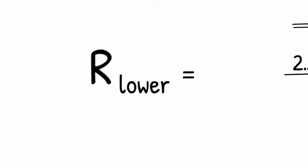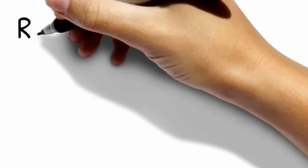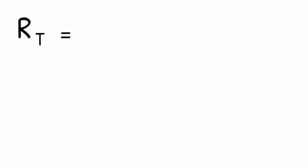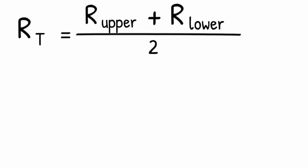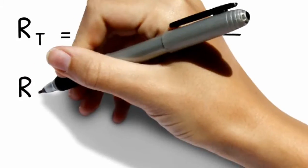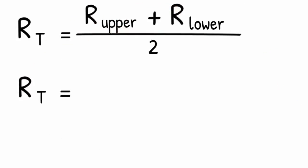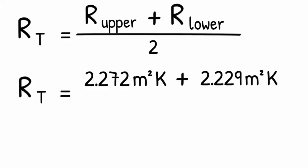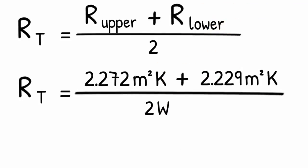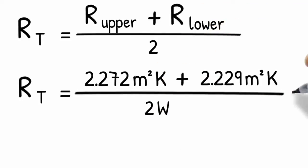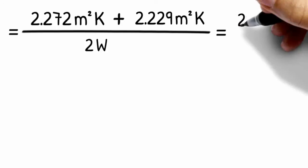The total thermal resistance is assumed to be right in the middle between the upper and lower boundaries. So we take the upper and lower boundary values, add them up and divide by 2. That's 2.272 plus 2.229 square meter times kelvin and we divide this by 2 watts which gives us 2.251 square meter times kelvin over watt.